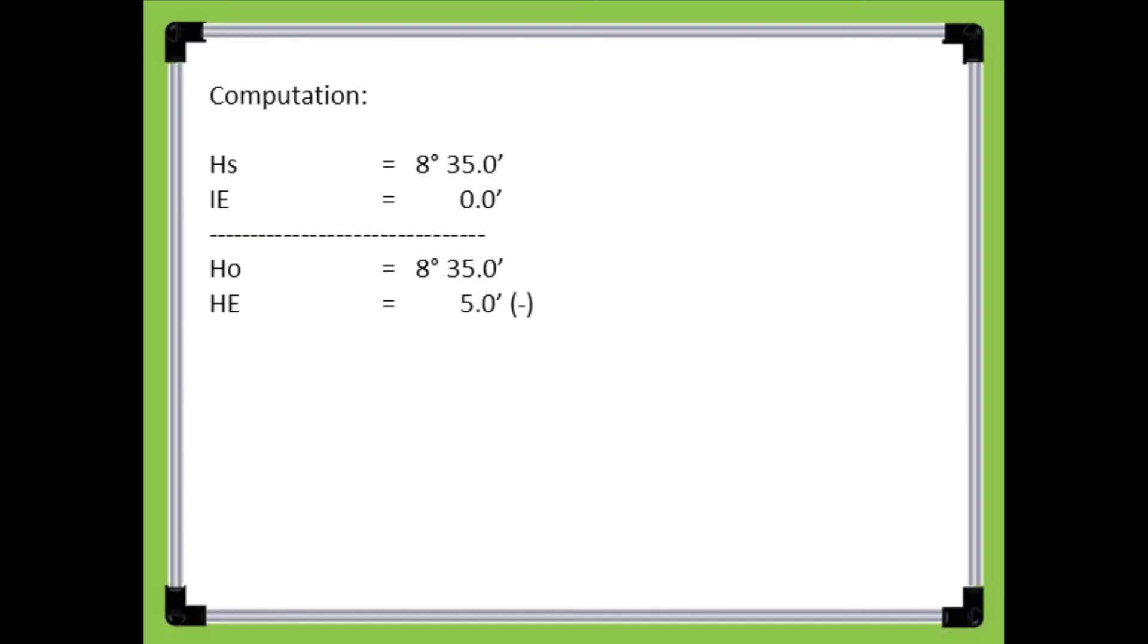Subtract it to the observed altitude. The result is the apparent altitude of the star Sirius, which is 8 degrees and 30.0 minutes.